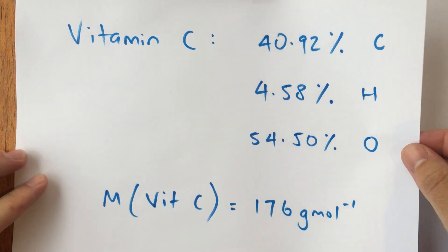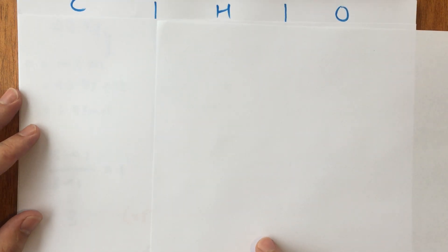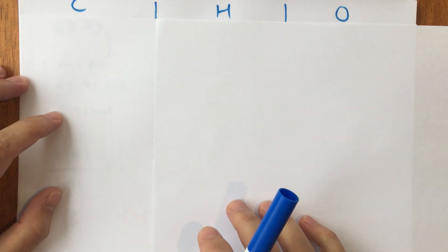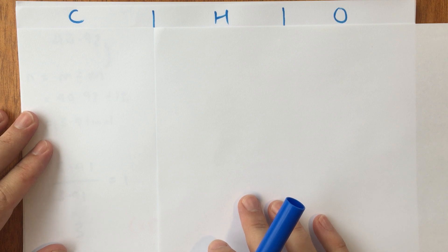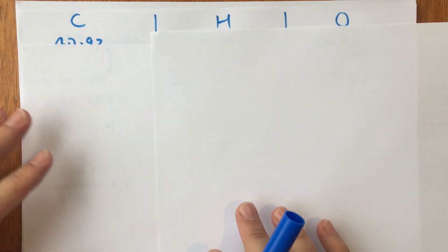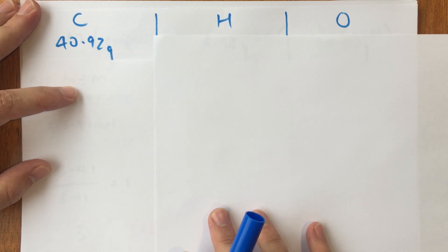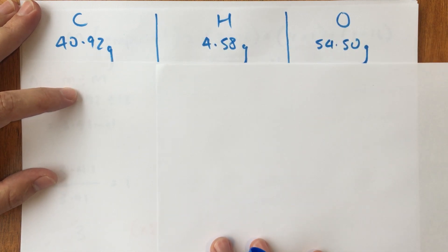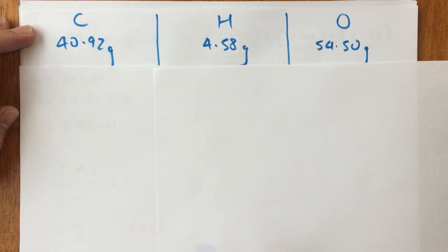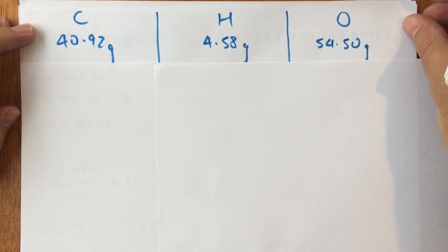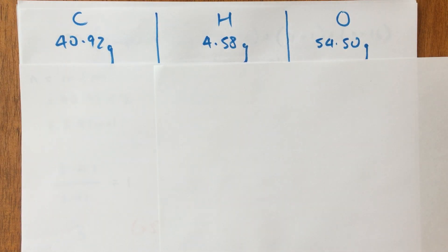Let's work this one through. The first step is to assume we are working with a 100 gram sample, and therefore all of our masses become apparent from the percentages. So if I have 40.92% carbon, I can just say I'm working with 40.92 grams. The same applies for hydrogen and oxygen — 4.58% hydrogen and 54.50% oxygen — because the percentage composition is a percentage mass composition. So the first step is to get the masses, which is quite straightforward.